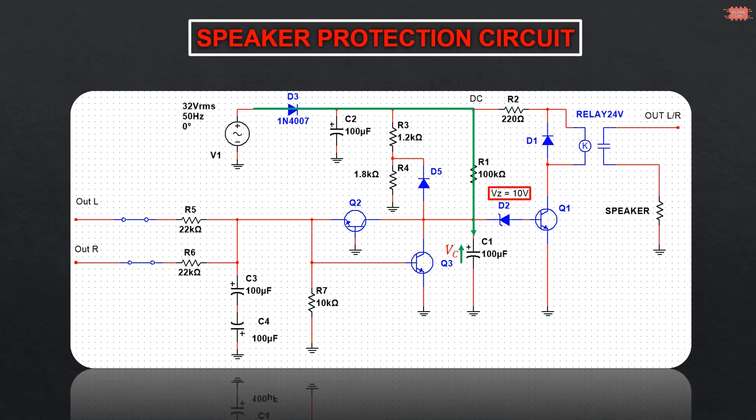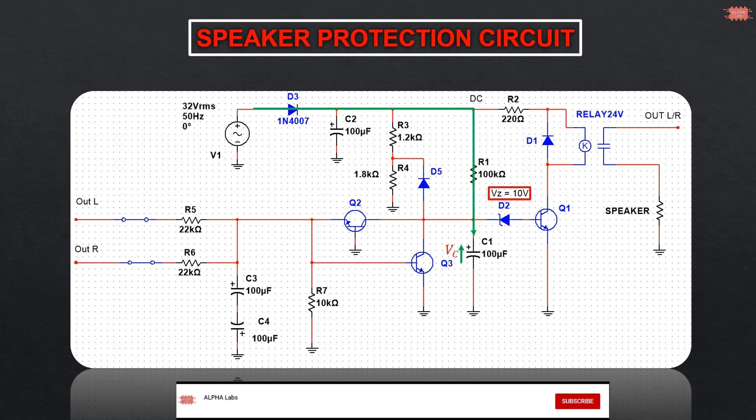The base-emitter junction voltage is 0.6V. So the voltage of capacitor C1 will increase to a threshold of 10.6V.